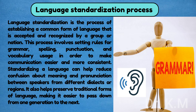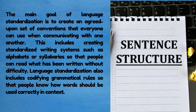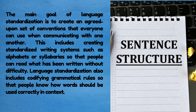The language standardization process involves establishing a common form of language that is accepted and recognized by a group or nation. This process involves setting rules for grammar, spelling, punctuation, and vocabulary usage in order to make communication easier and more consistent. Standardizing a language can help reduce confusion about meaning and pronunciation between speakers from different dialects or regions. It also helps preserve traditional forms of language, making it easier to pass down from one generation to the next. The main goal is to create an agreed-upon set of conventions that everyone can use, including standardized writing systems and codified grammatical rules.